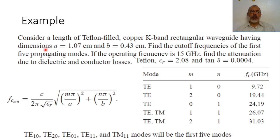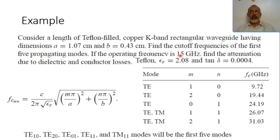As an example, consider a length of Teflon-filled K-band rectangular waveguide with dimensions A = 1.07 cm and B = 0.43 cm. It is required to find the cutoff frequency of the first five propagating modes, and if the operating frequency is 15 GHz, find the attenuation due to dielectric and conductor loss. The Teflon has epsilon_r = 2.08 and tan(delta) = 0.0004.